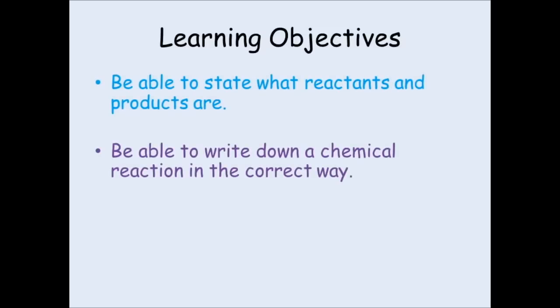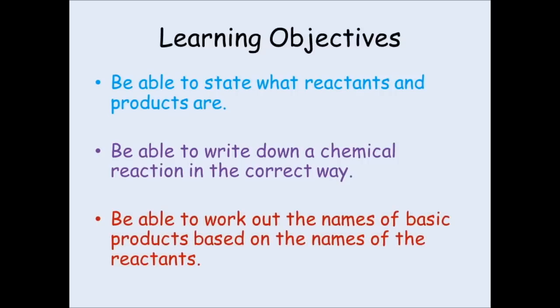So hopefully you can now state what reactants and products are. You should know how to write down a chemical reaction in the form of a word equation and the correct way of doing this. And hopefully you can start to predict the names of products where a metal has joined with a nonmetal. So don't forget to fill out the worksheet so I know you've watched this presentation. Thank you.